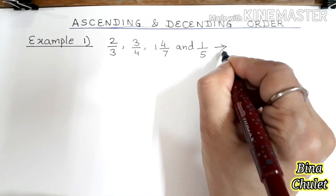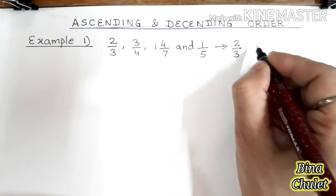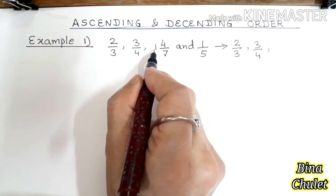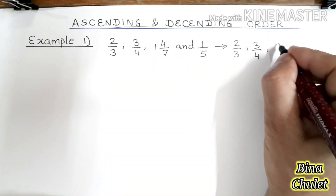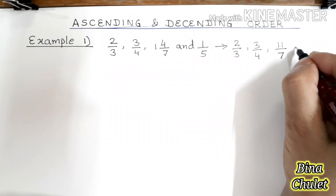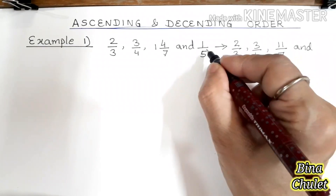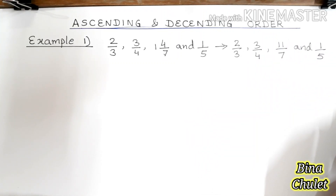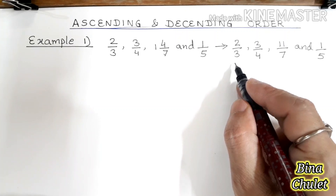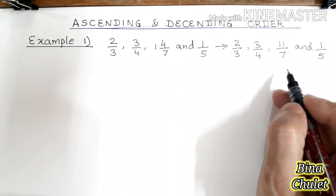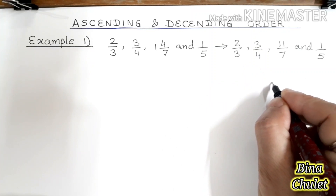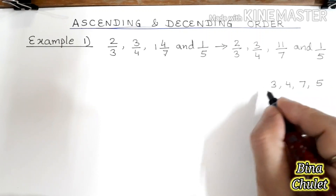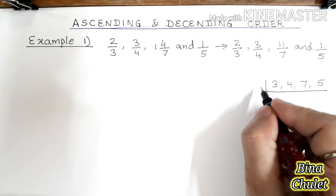This set of fractions becomes 2 upon 3, 3 upon 4. Now this will be 7 ones are 7 plus 4, that is 11 — that is 11 upon 7 — and this will remain as it is. So we have these 4 fractions now. The first step is to find the LCM of the denominators, so the denominators are 3, 4, 7, and 5.